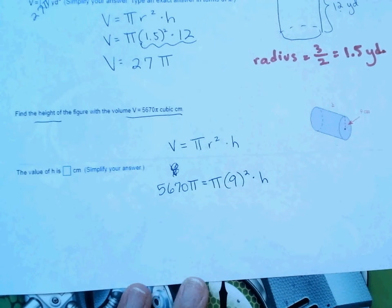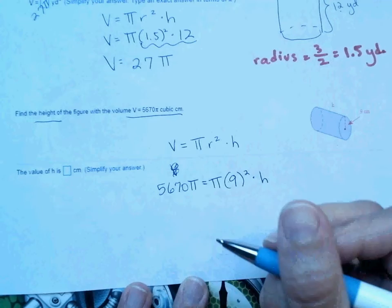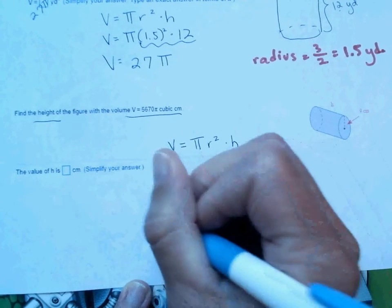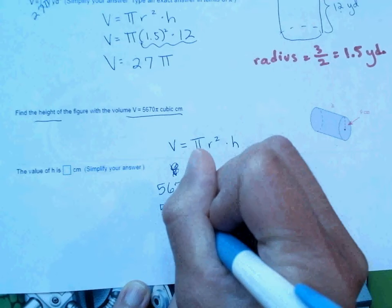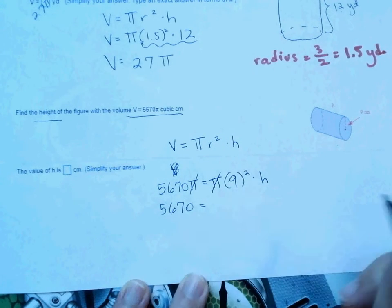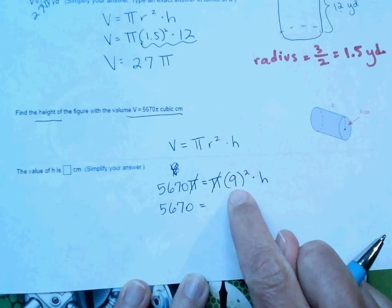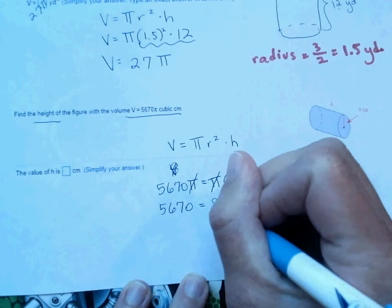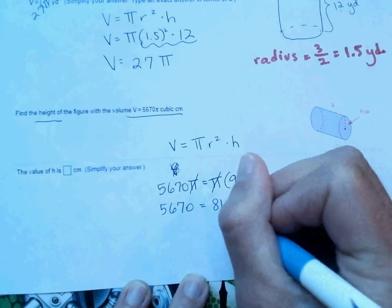Divide by pi on both sides is what I would do to cancel those out. So you have 5,670 equals. Now we can simplify. 9 squared, type in on your calculator. Hopefully you know 9 squared is 81 times h.